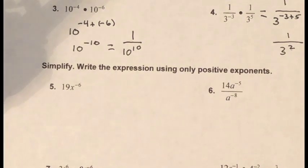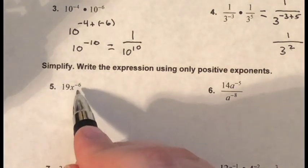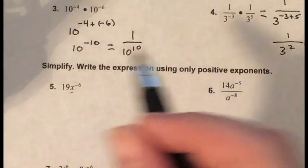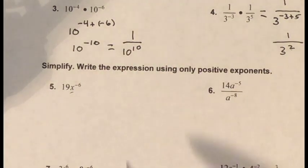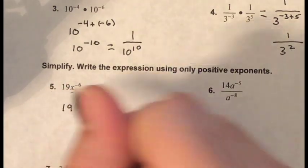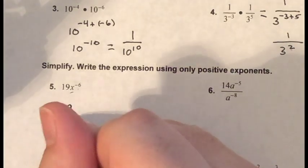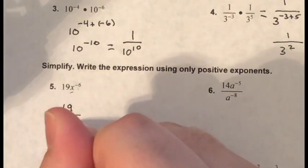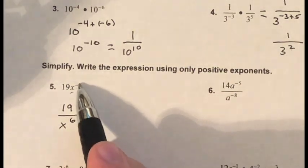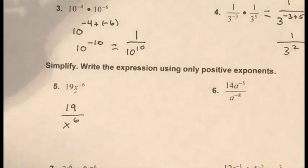Problem five: 19x to the negative six. The exponent only affects the base x, not the 19. So when I rewrite this, the 19 stays where it is, and I rewrite x to the negative six as a fraction — x to the sixth power becomes my denominator. The result is 19 over x to the sixth.